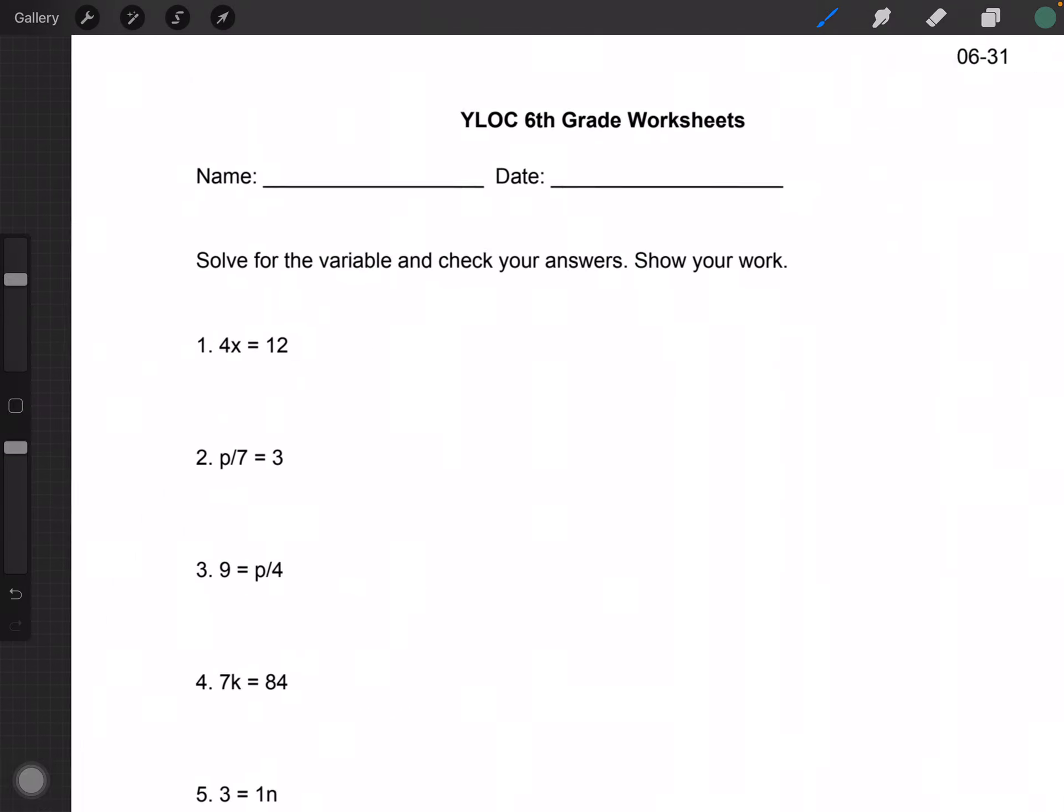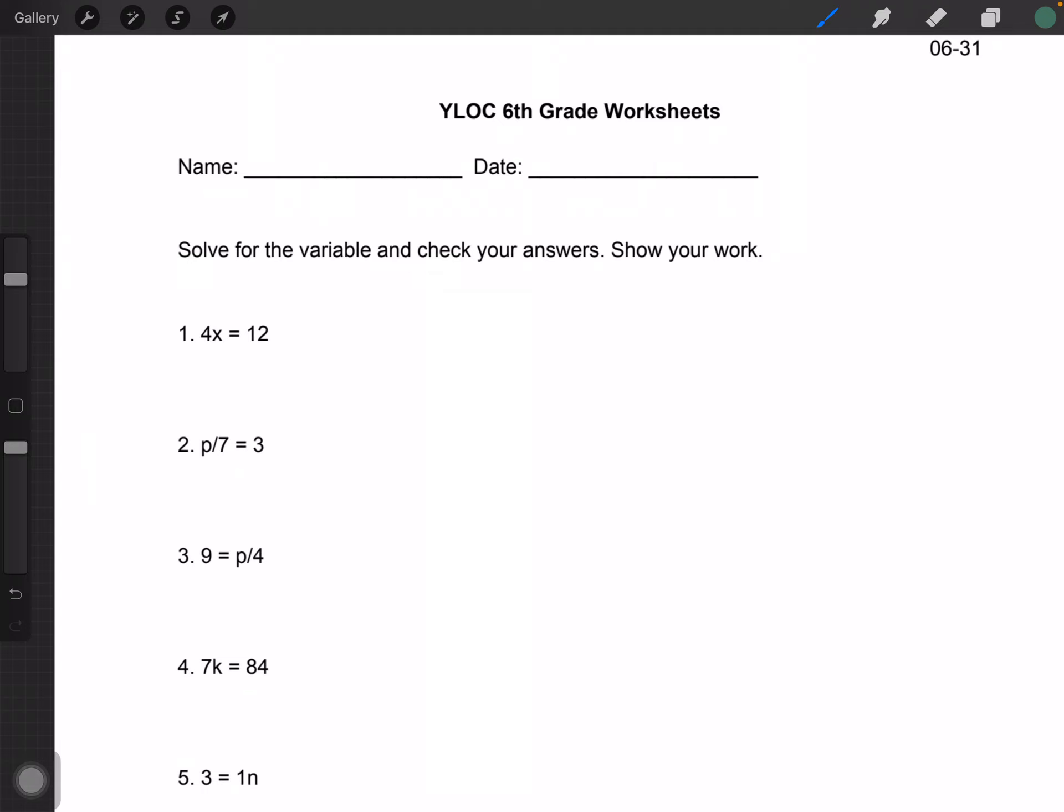So, solving for the variable means we want to isolate the variable, or the letter, or the one that we don't know. And in this case, the first question, it would be X. And in order to isolate it, or to make it so it stays on one side of the equation while everything else is on the other side, we want to do inverse operations. So in this case, X is being multiplied by 4. It's not alone, and we want to get it alone.